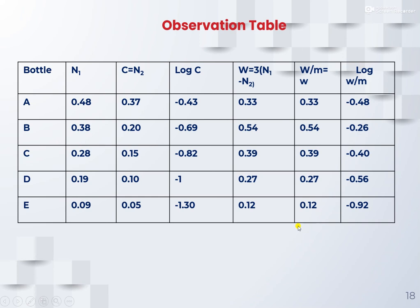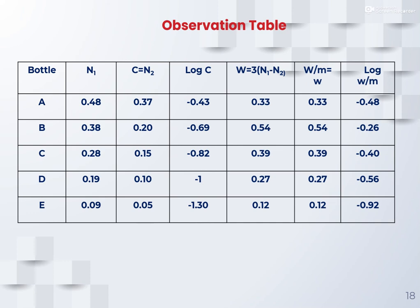Calculate log C (i.e., log N2) for each bottle. Then calculate W = 3 × (N1 − N2), which gives gram equivalents of acetic acid adsorbed per liter. Then calculate W/M where M = 1 gram of charcoal, so W/M equals W. Finally, take the log of W/M. These values fill the observation table: columns are bottle label, N1 effective normality, N2 equilibrium normality, log C, W = 3(N1−N2), W/M, and log(W/M).